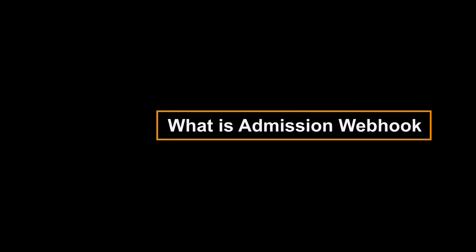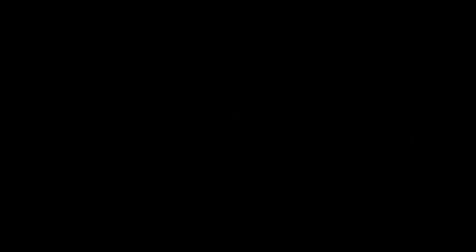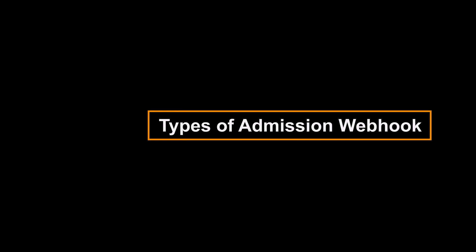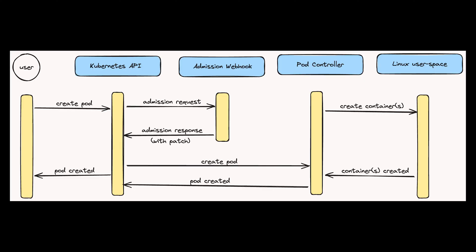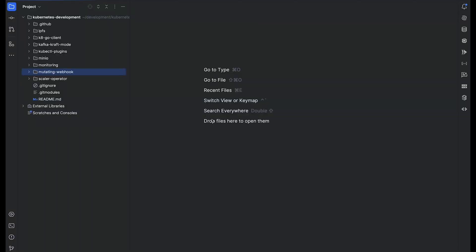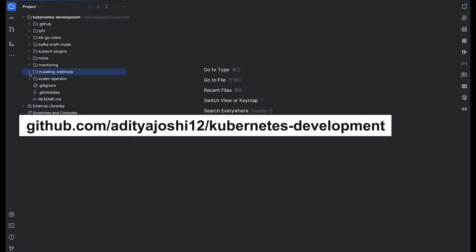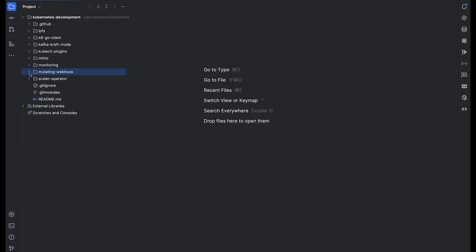Now that we have a basic idea of what admission webhooks are, how they work, and the different types available, let's see the implementation of a mutating webhook. For this demonstration, we are going to build a mutating webhook in Golang. This mutating webhook is going to modify the pod creation request — whenever a pod is created, we will apply the request and limit parameters into the pod object.